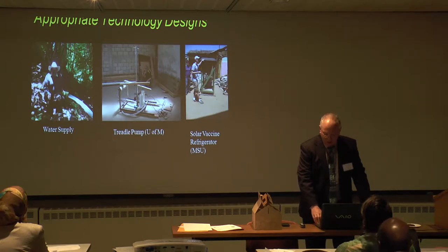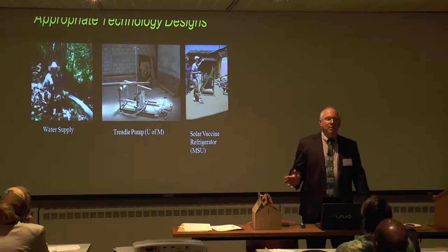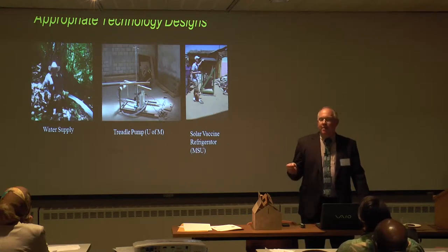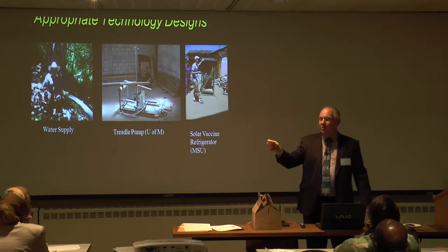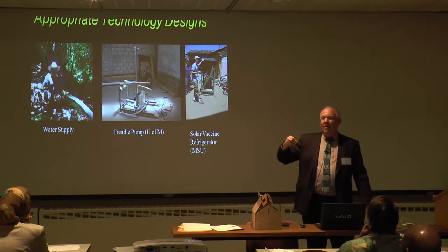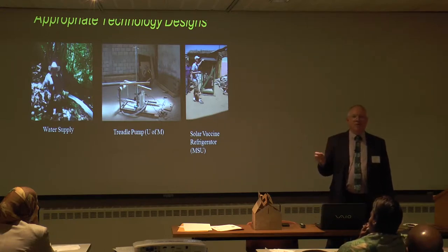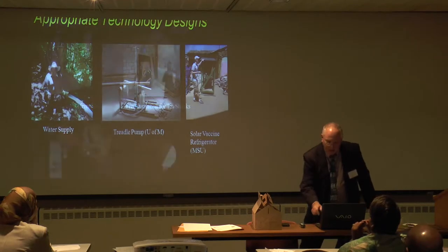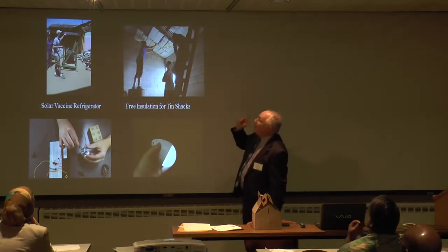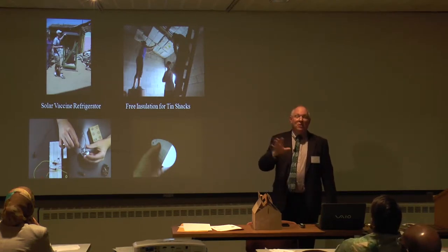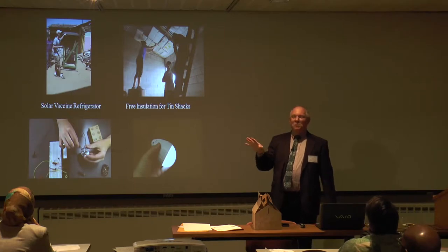On the far right is the solar vaccine refrigerator — a simple refrigerator that can be built in developing countries, even in rural areas. This solves the problem that vaccines need to be kept cold from the moment they're made to the moment they're injected. But many people live three or four days on foot from supply centers, which is too long for vaccines to stay cold. We designed a refrigerator you could build locally out of locally available materials. It uses heat from the sun to refrigerate things — you put it in the sunlight and it freezes things. I know it sounds counterintuitive; I'll explain it later if people are curious.